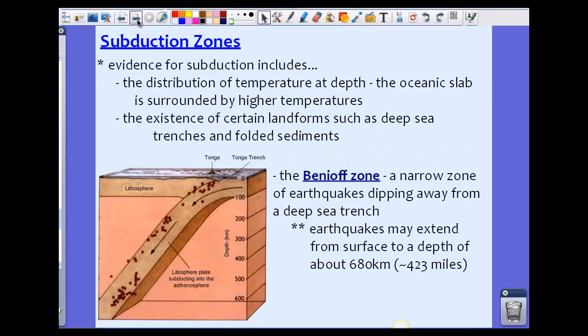We have some evidence for subduction, which includes three different pieces. The first piece of evidence is the distribution of temperature at depth. The oceanic slab is usually surrounded by higher temperatures, so this gives evidence for subduction. We also see the existence of certain landforms such as deep sea trenches and folded sediments.